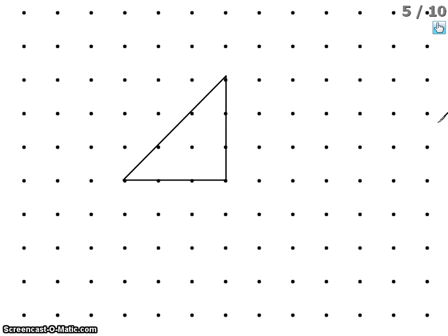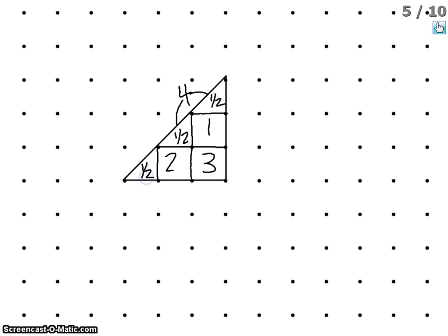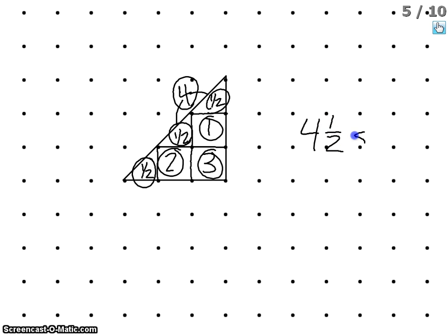Now we're going to look at another problem. We'll start out by connecting all the dots to make either triangles or squares. So we've connected all the dots — now it's time to count up all the square units inside. I'll have one, two, three. This is a half of a square unit, and this is a half of a square unit, so both together give me four. This is a half right here, so adding that gives me a total of four and one-half square units.